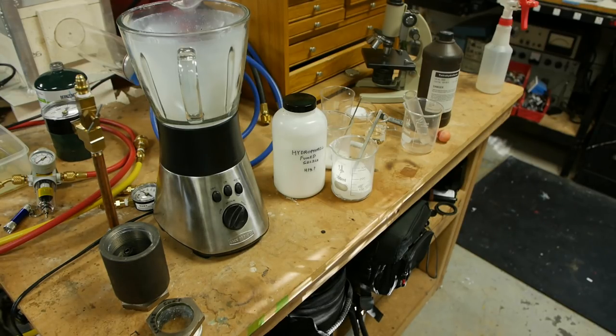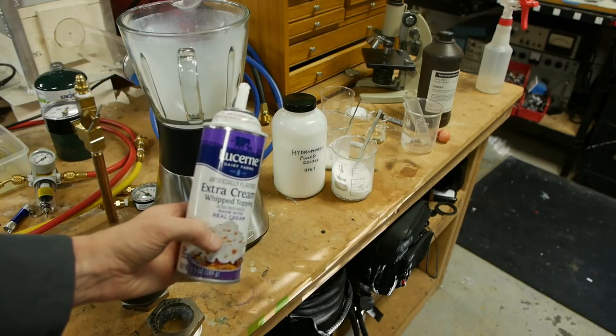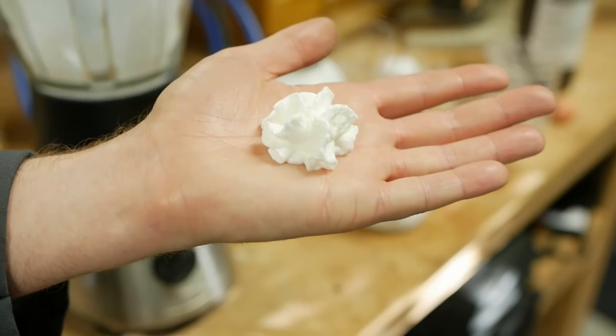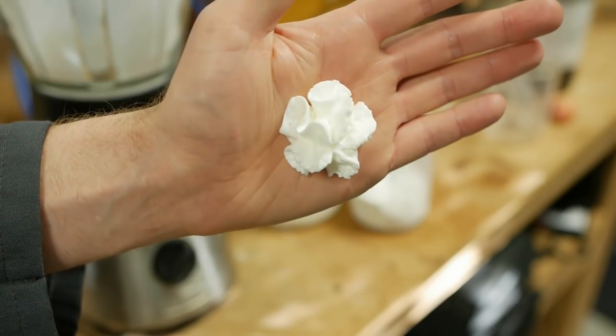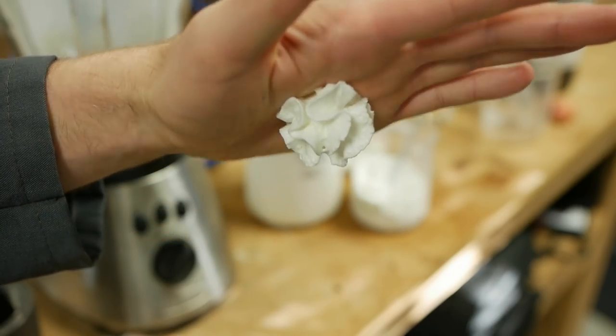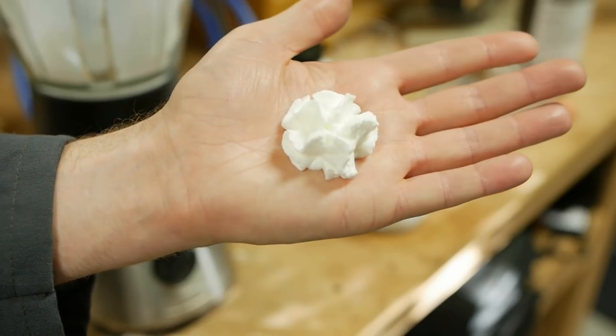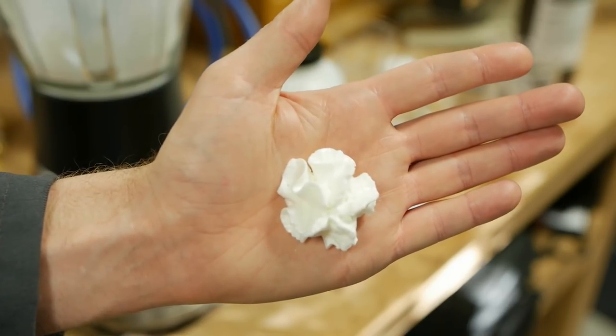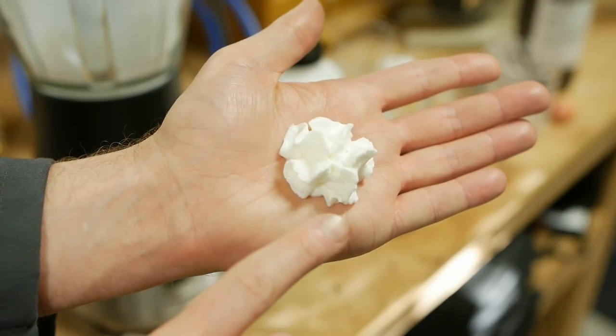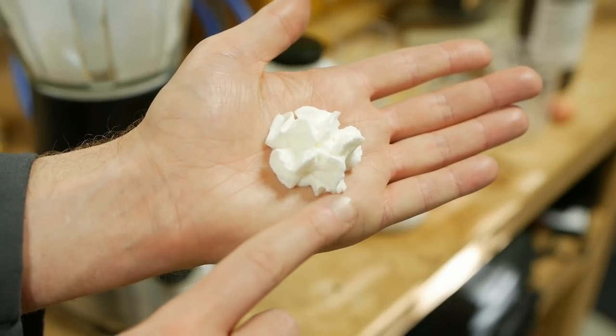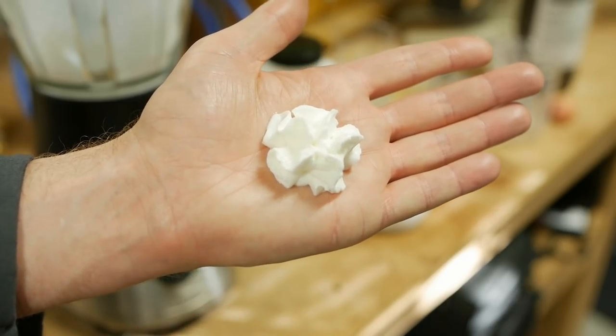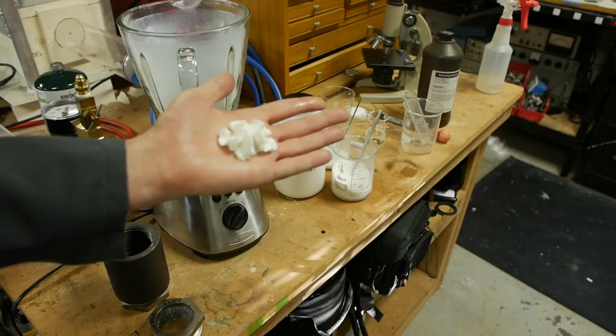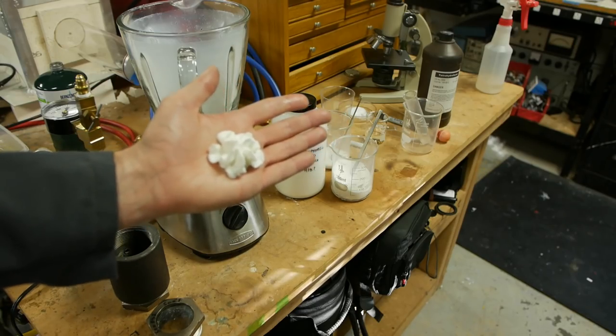There's a common everyday material that's kind of the inverse of this, and that is whipped cream. This stuff is great because it is a gas that is dispersed in a liquid, and it creates almost a solid sort of material because of the gas bubbles distributed in there. But for anyone who's tried to make whipped cream from plain milk, you know it doesn't work at all. The thing that actually allows the gas bubbles to not coalesce into one big gas bubble is the fat that's in here.